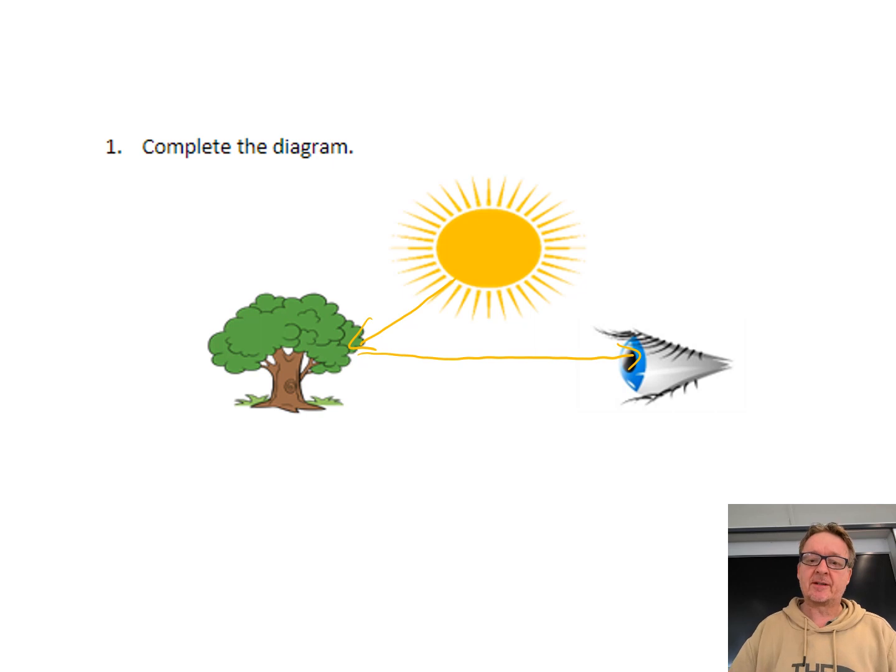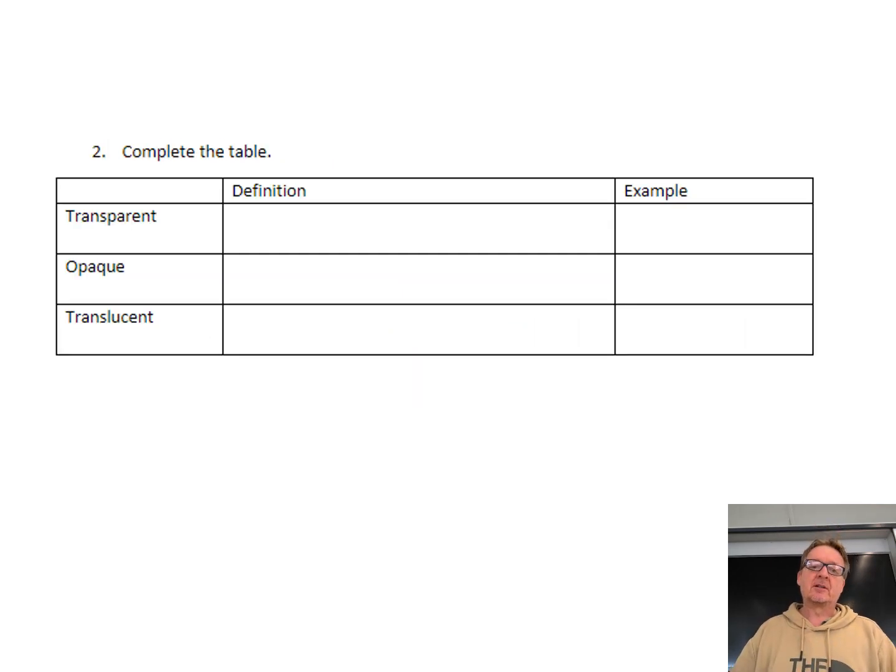So this is then a complete diagram. It's quite simple, really. Light shines onto a tree. Light is then reflected off the tree and it goes into the eye.